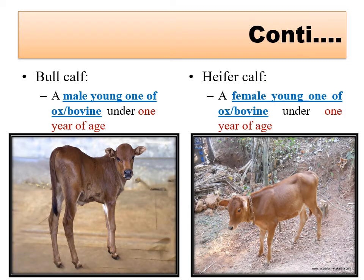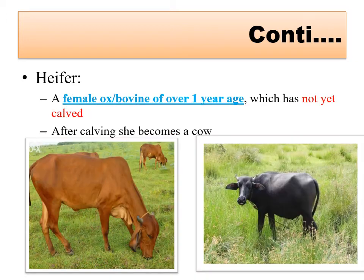Bull calf refers to a male young one of cattle or buffalo from six months to one year of age. If it is female, it is called a heifer calf - a female young one of cow or buffalo from six months to one year of age.